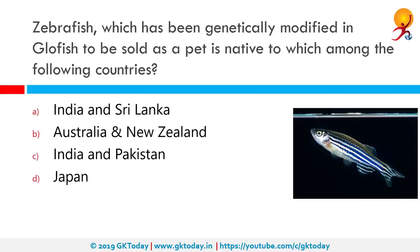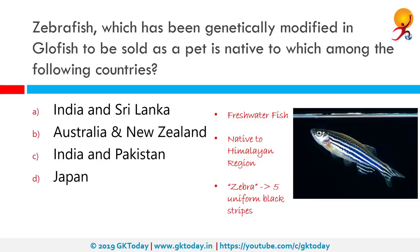Zebrafish, which has been genetically modified as GloFish to be sold as a pet, is native to which country? Zebrafish is a freshwater fish belonging to the minnow family of the order Cypriniformes. It is native to the Himalayan region and is popular as an aquarium fish, frequently sold under the trade name Zebra Danio. The fish got its common name from the five uniform pigmented horizontal stripes on its body that resemble the stripes of a zebra. The correct answer is that it is native to India and Sri Lanka.